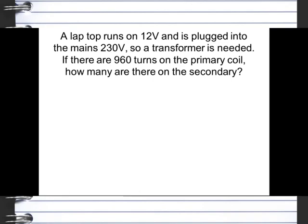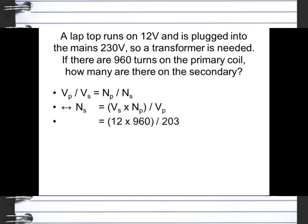Let's have a look at how this actually works with an example. A laptop runs on 12 volts, it's plugged into the mains at 230 volts. So a transformer is needed, that's the little box that you plug into your laptop through the cables. If there are 960 turns on the primary coil, how many will there be on the secondary? We've got our primary voltage and our secondary voltage equals our number of turns on the primary and secondary coil. So we're going to rearrange that equation to find out the number of turns on the secondary coil. So we do Vs, the voltage on the secondary coil, times the number of turns on the primary coil, divided by the voltage on the primary coil. And that should give us 12 times 960 divided by 230, which should equal 50 coils.